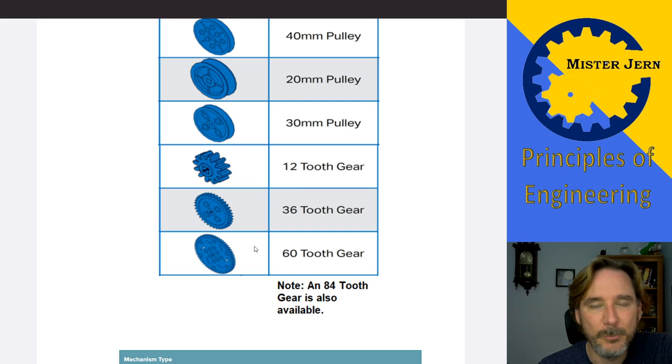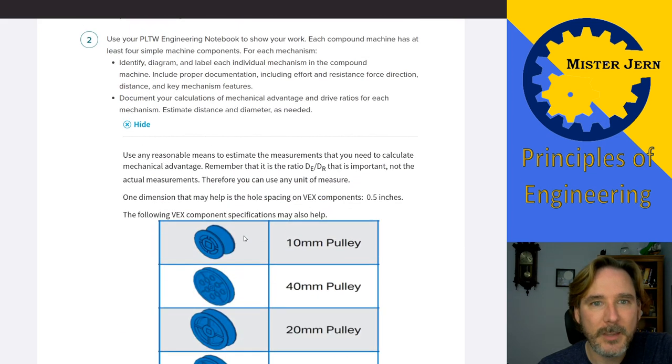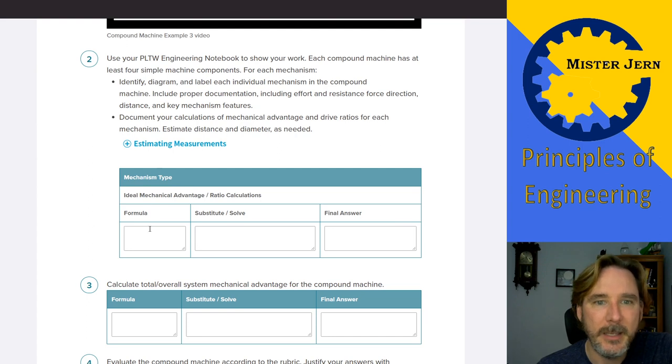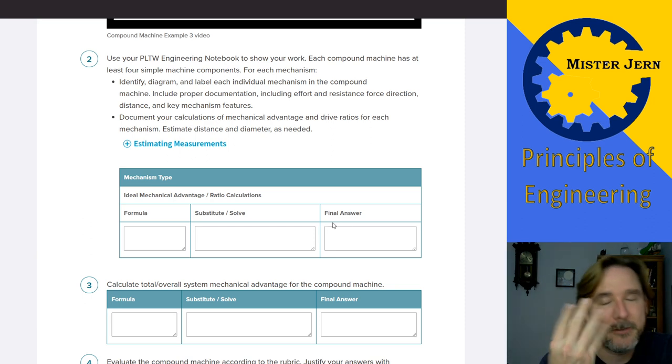and it looks like it might be an 82 tooth gear, then it's probably 84 tooth gear. Okay. So that's, that's a little pull down thing. So that could be helpful for you for estimating and use the general formula or I should say structure for calculating these things, just like the, write down the formula for each thing, substitute and solve final answer. You should have that at least four times. I just say four times, one for each of the simple machines in the compound machine that you chose.